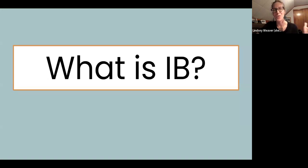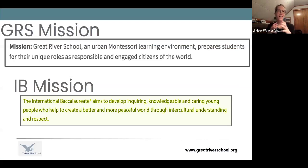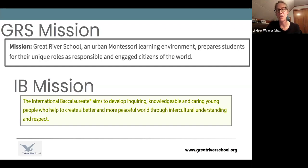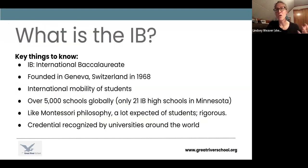We use acronyms a lot at Great River School. What is IB? We love the partnership of Montessori and IB. I have the IB mission statement here because both the Great River School mission and the IB mission are so centered in creating and building communities and students who are peacemakers. You see some key words in both: responsible and engaged citizens of the world, better and more peaceful worlds through intercultural understanding and respect.